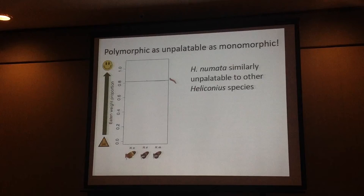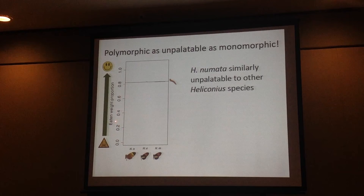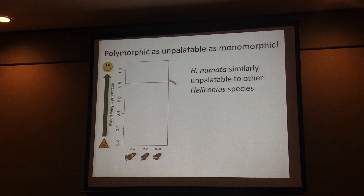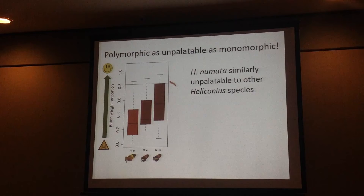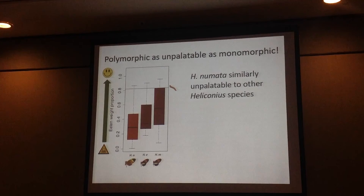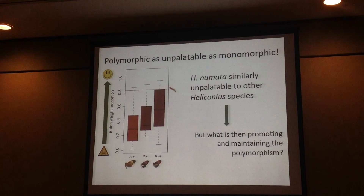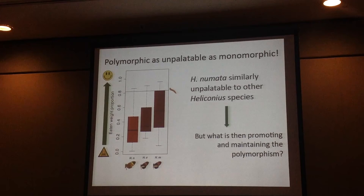What I found: here is the eaten weight proportion — if it's close to zero, the prey was very distasteful and the predator didn't eat it; if it's close to one, it was tasty and they ate it. The mealworm eaten proportion was above 80%. Indeed, what I found was that there was no difference in palatability between monomorphic and polymorphic Heliconius species. So that cannot be the factor promoting polymorphism within this species, and there are some other theories we still have to test.